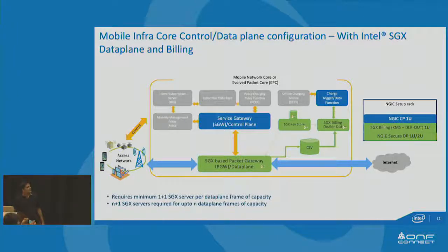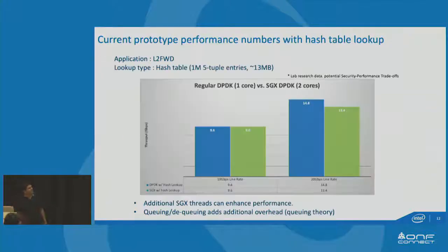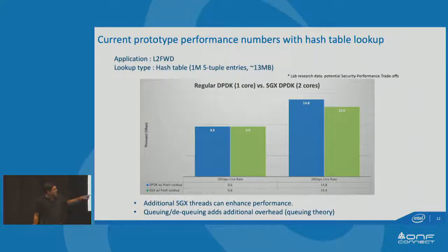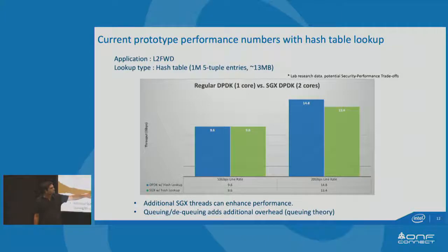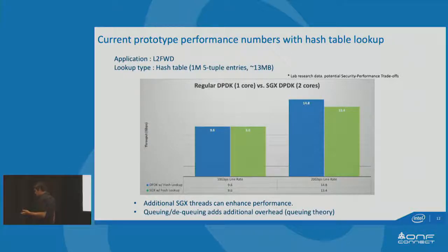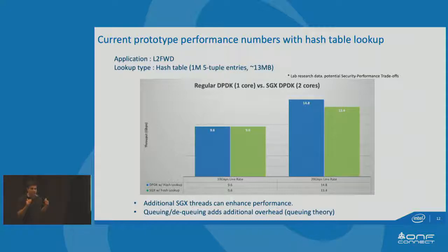Performance-wise, here it is. What we did is run a simple L2 forward application inside an SGX enclave, which looks at each and every packet against a hash table. With a 10 Gbps line rate with 64-byte packets coming in — no difference at all. With a 20 Gbps line rate, yes, there is some overhead on SGX. But our goal — which we have been able to achieve — is to always ensure that whatever design we come up with, the overhead should always be less than 10%.